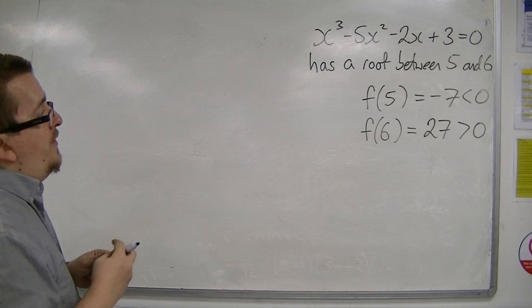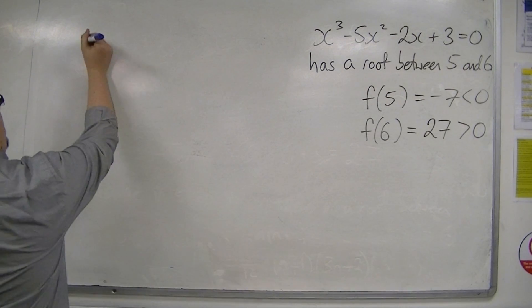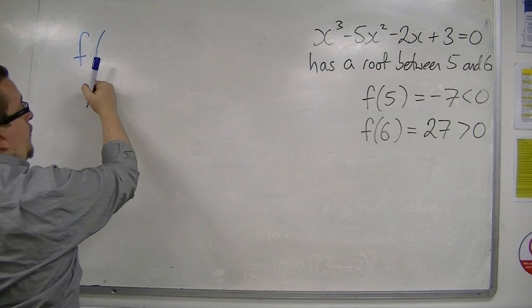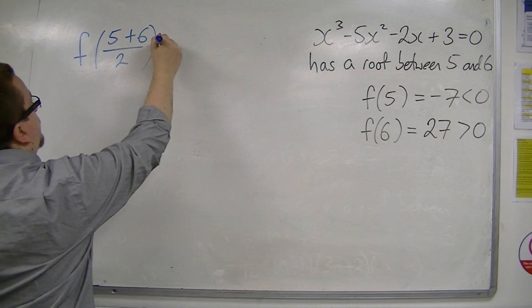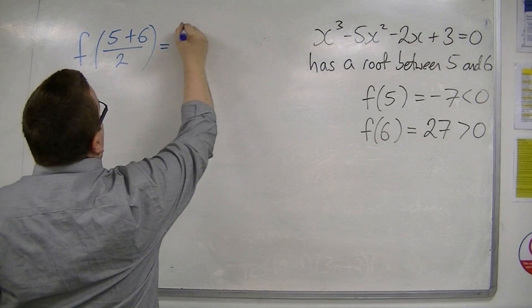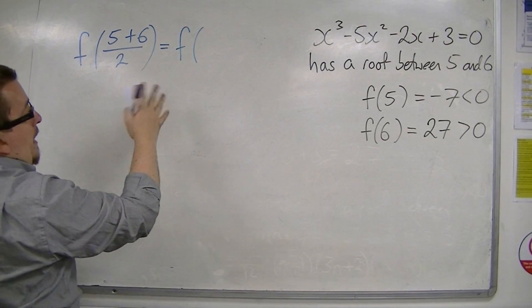So we can use the bisection method by substituting in, or finding, f of 5 plus 6 divided by 2. So in other words, f of 5.5.